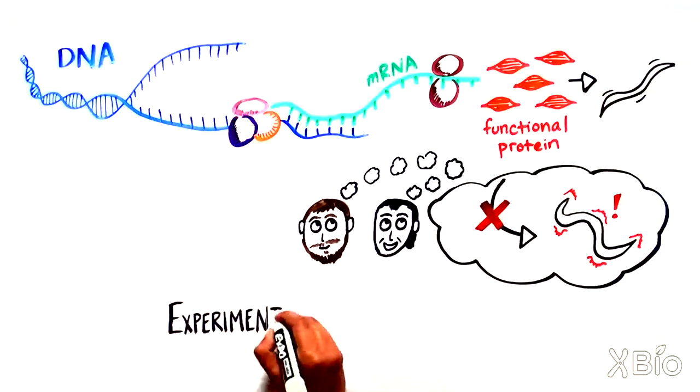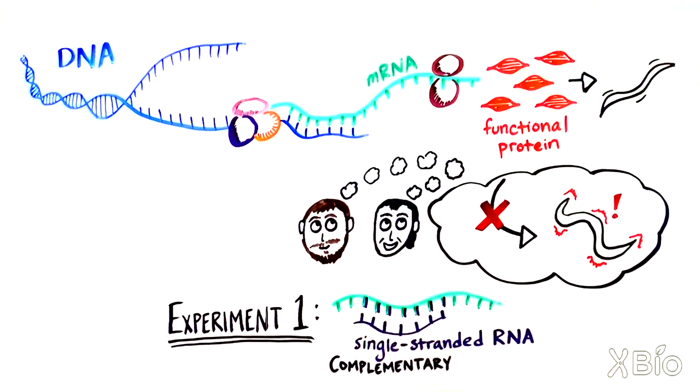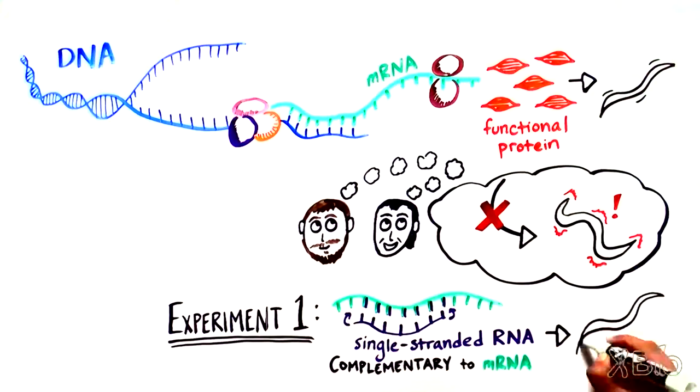First, they introduced single-stranded RNA, or ssRNA, that was complementary to the target RNA, thinking that this would block the cell's ability to read the RNA. But to their surprise, the worms were completely normal.